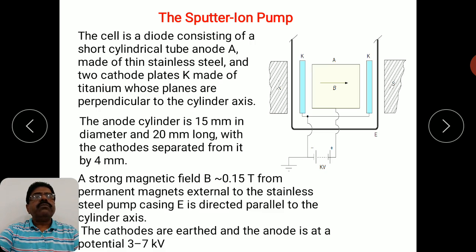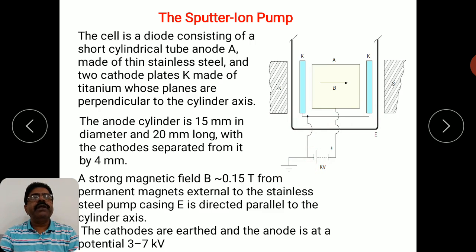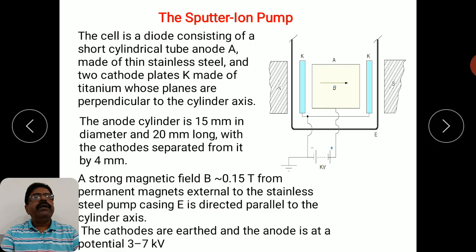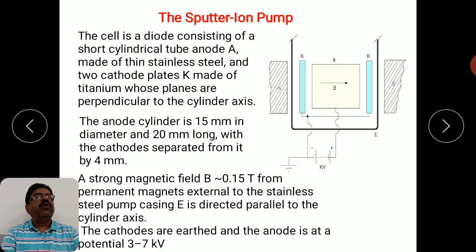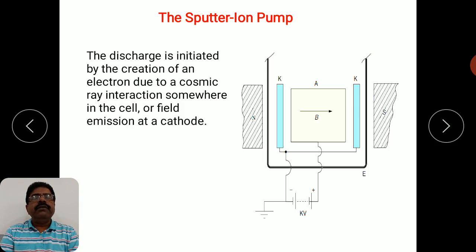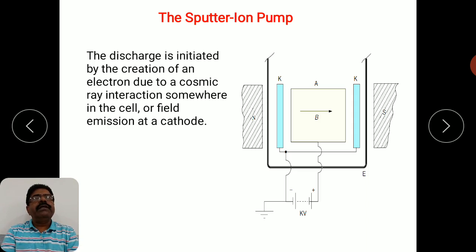The cathodes are kept at ground (earth) potential, while the anode is maintained at a high positive potential of the order of 3 to 7 kilovolts. We will now discuss the function of this Penning cell — how it acts as a pump and the meaning of the sputter ion pump.